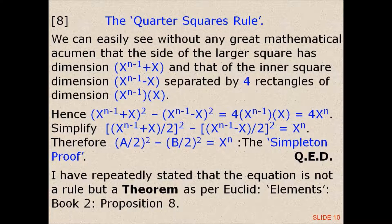Therefore, (A divided by 2) squared minus ((X to the power n minus 1 minus X) divided by 2) all squared equals X to the power n.